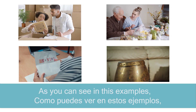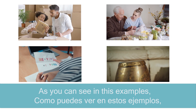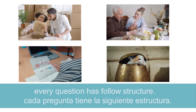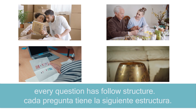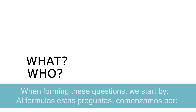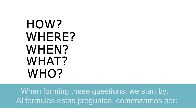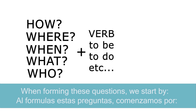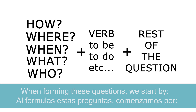As you can see in these examples, every question has followed a structure. When forming these questions, we start by who, what, when, where, or how. Then we need the verb — to be, to do, etc. Then the rest of the question.